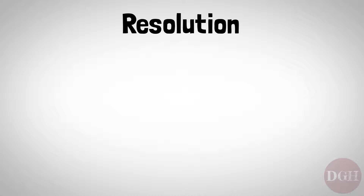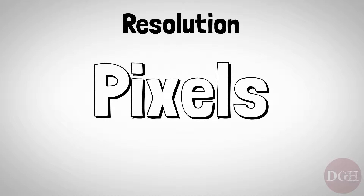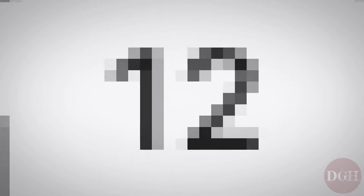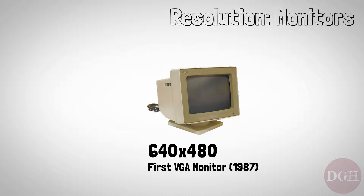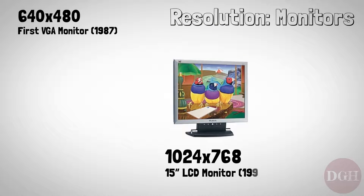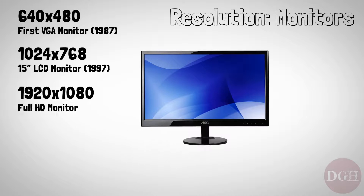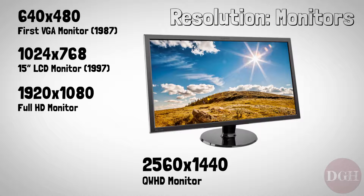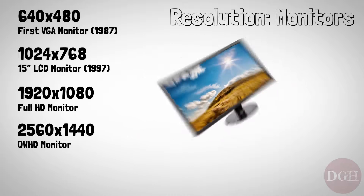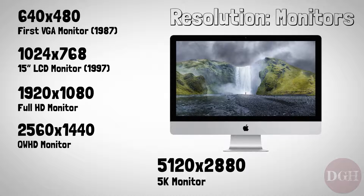Our next term is resolution, which basically refers to how sharp and detailed a display looks. Everything you see on a display is composed of pixels — tiny individual dots of light. Resolution is expressed as two numbers: the number of horizontal pixels and the number of vertical pixels. The first VGA monitor in 1987 was 640 by 480. Ten years later, a standard resolution was 1024 by 768. Next came full HD monitors at 1920 by 1080, then quad HD at 2560 by 1440, and then a 5K monitor with 5120 by 2880.